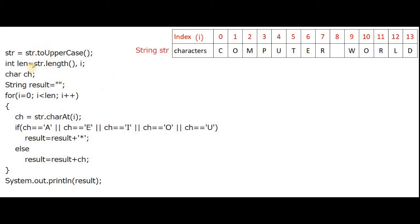Some other necessary variables are declared here. I have calculated the length using the length method and stored it into variable 'length'. For running the loop — which indicates the index — I have taken variable 'i'. For extracting each character from position 'i', I have a character-type variable 'ch'. The main output will be stored into the variable 'result', which is initially empty.